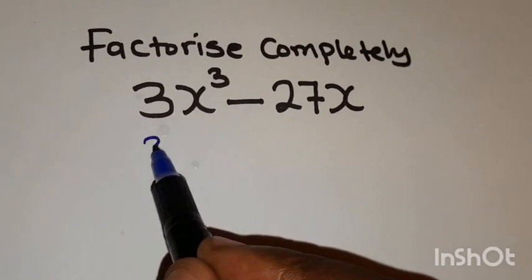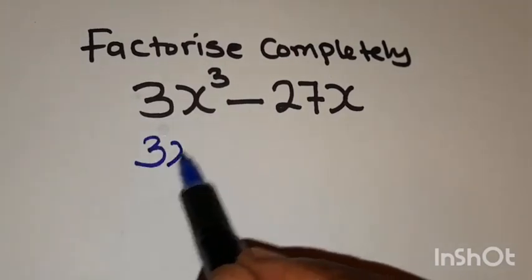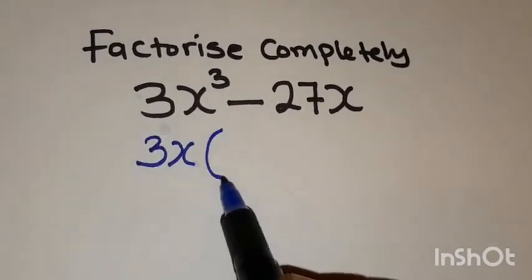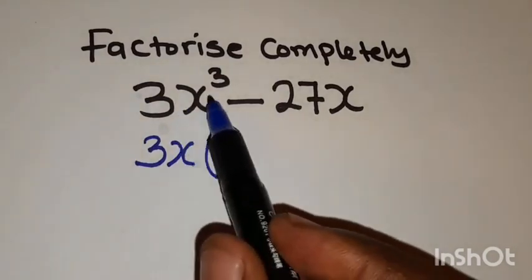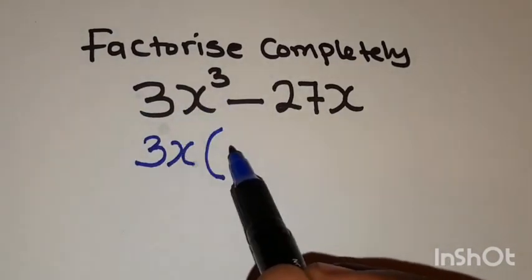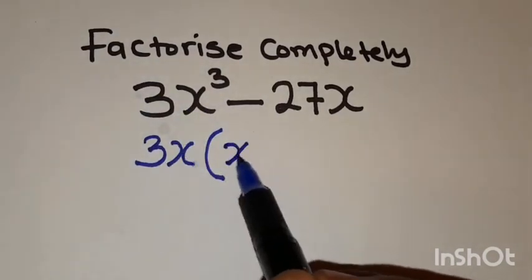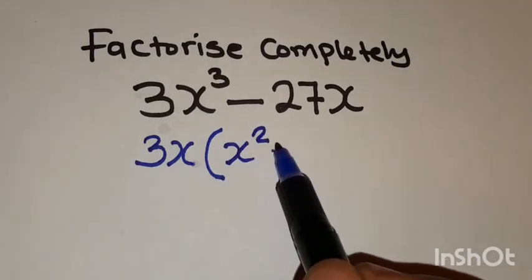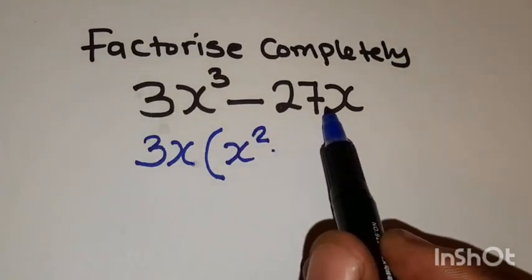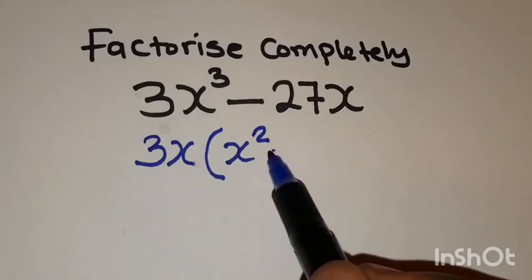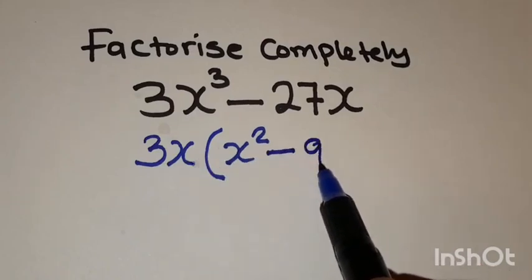So we are going to have 3x, open brackets. 3x cubed divided by x gives you x squared. Then negative 27x divided by 3x, you have minus 9.